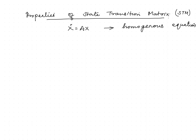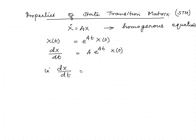Let us assume that the solution of this equation is of the form x(t) = e^(At) x(0). If I take the derivative of this I get A e^(At) x(0), that is dx/dt = A e^(At) x(0), which is nothing but Ax(t). So if I compare equations one and two we can see that both are the same.